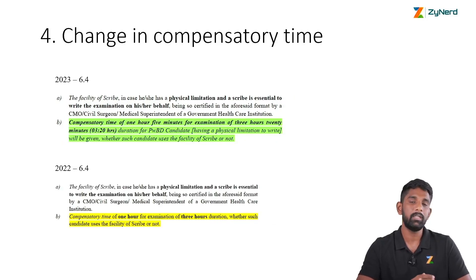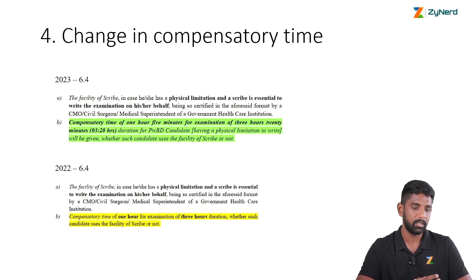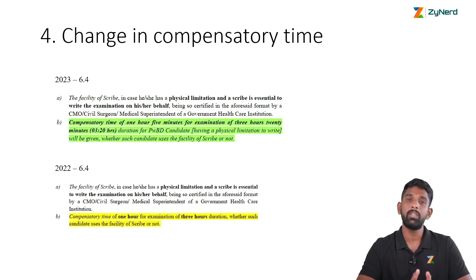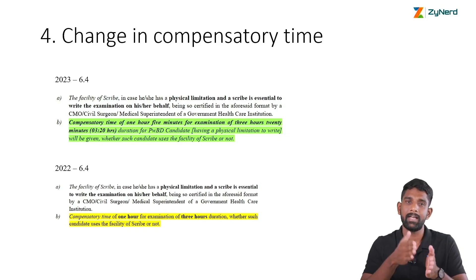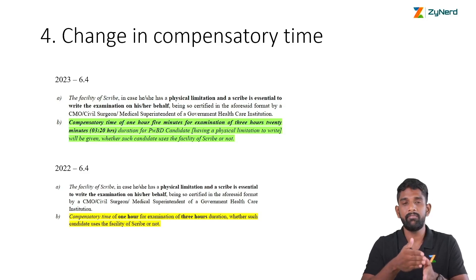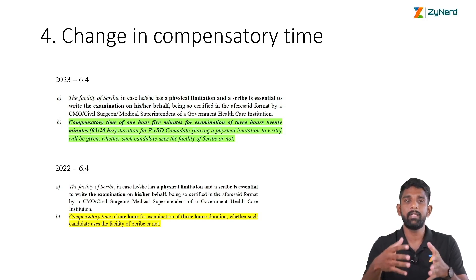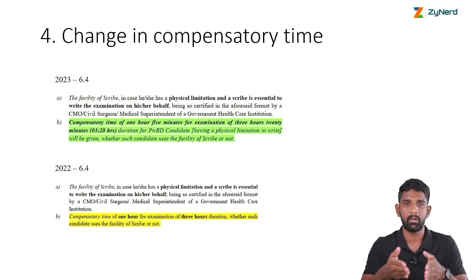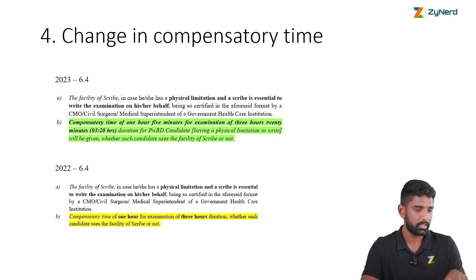Next is the change in the compensatory time. The facility of the scribe is available in case a PWD candidate has a physical limitation where a scribe is essential to write the examination. For such candidates, they will get a compensatory time of 1 hour and 5 minutes whether they use the scribe facility or not. The change here is the additional 5 minutes given this year.